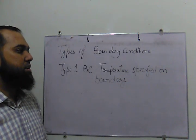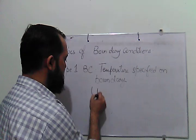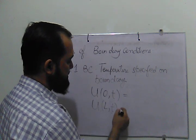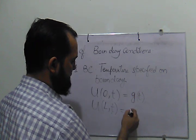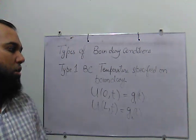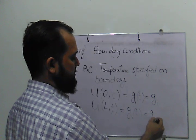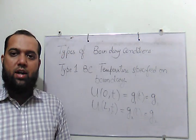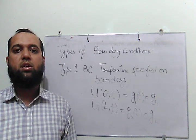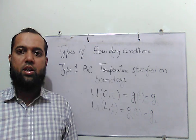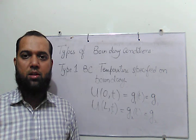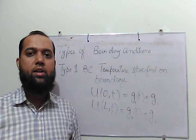In the first type, the temperature is specified on the boundary, which means that U(0,t) and U(L,t) is G1(t) and G2(t). The temperature is a function of time, or it can be taken as constant. So temperature can be changing at the boundary or fixed at the boundary. In type 1 boundary condition, the boundary temperature is given. The simplest case is when the temperature is fixed on the boundary and not changing.